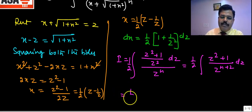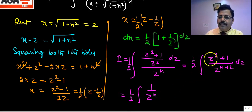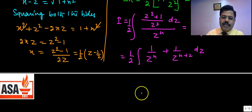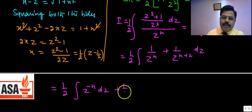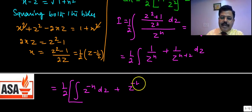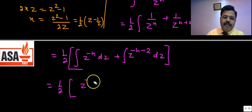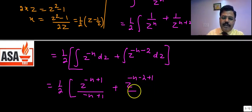Separating the terms: (1/2) [z^(-n) + z^(-n-2)] dz. Integrating each term: z^(-n) gives z^(-n+1)/(-n+1) and z^(-n-2) gives z^(-n-1)/(-n-1). So the integral becomes (1/2) [ z^(1-n)/(1-n) - z^(-(n+1))/(n+1) ] + C.